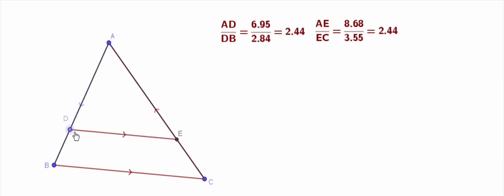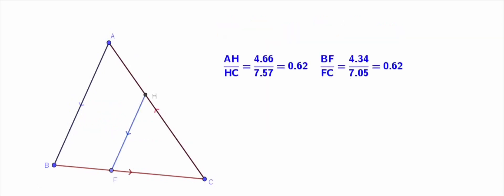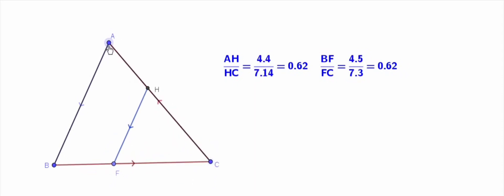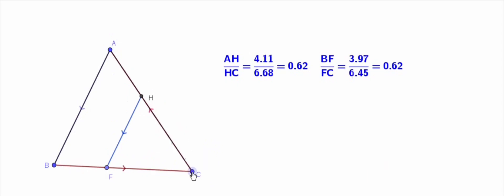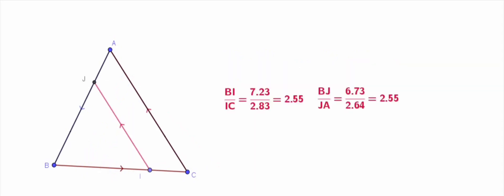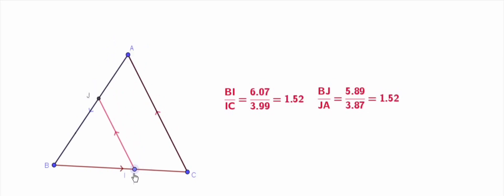Even if we alter the measurements, the ratio is remaining the same. Let us do this for other side AB, HF parallel to AB is drawn and the ratios remain the same. Now let us draw a side JI parallel to AC and check whether the ratios are equal or not. BI by IC is equal to BJ by JA. So here also the ratios remain the same.